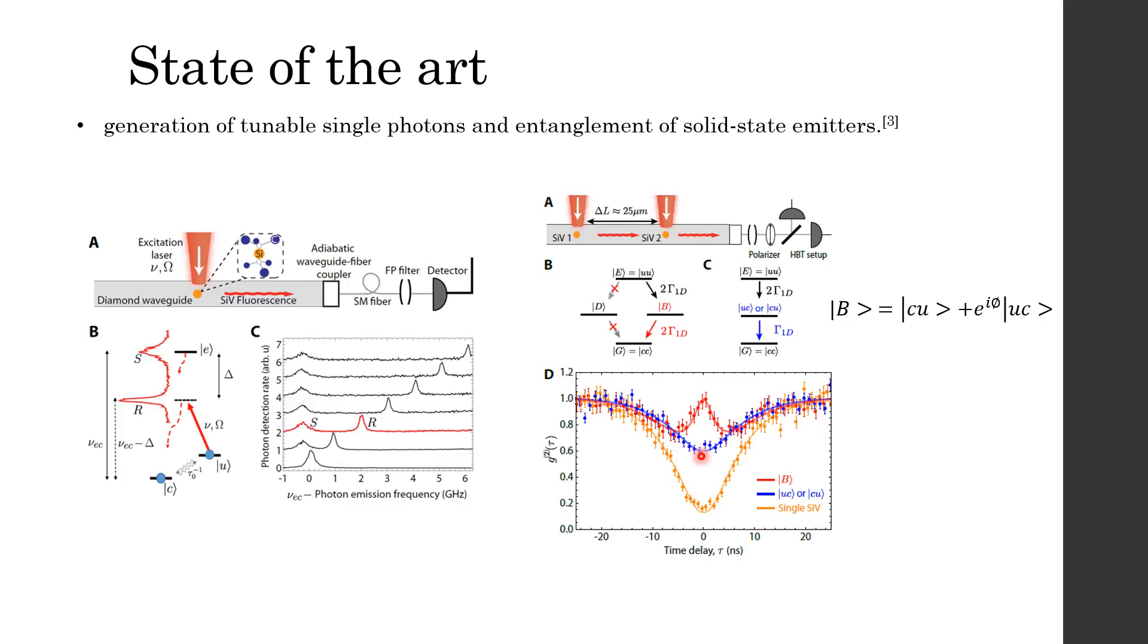Alternatively, if the Raman transition of two SiV centers are tuned into resonance with each other, a novel superradiant feature is observed in photon correlation around zero time delay with G equals to 0.19. And this means the entanglement is realized.